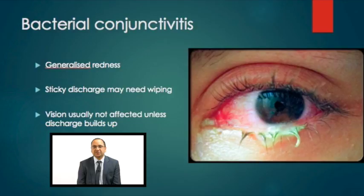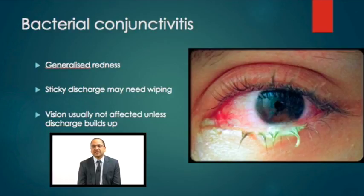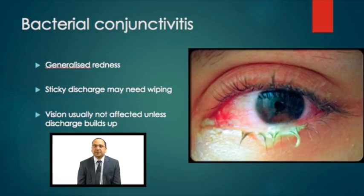This slide shows bacterial conjunctivitis. When there is bacterial conjunctivitis, the eyes become red and usually both eyes are affected — a generalized redness. The main distinguisher compared to viral conjunctivitis is that the eyes are not just watery; there is a discharge which feels sticky and can be yellow or white, and it's not uncommon to have to wipe it away. Vision is not usually affected unless the discharge builds up in the line of sight. The condition isn't painful but discomfort can be experienced.